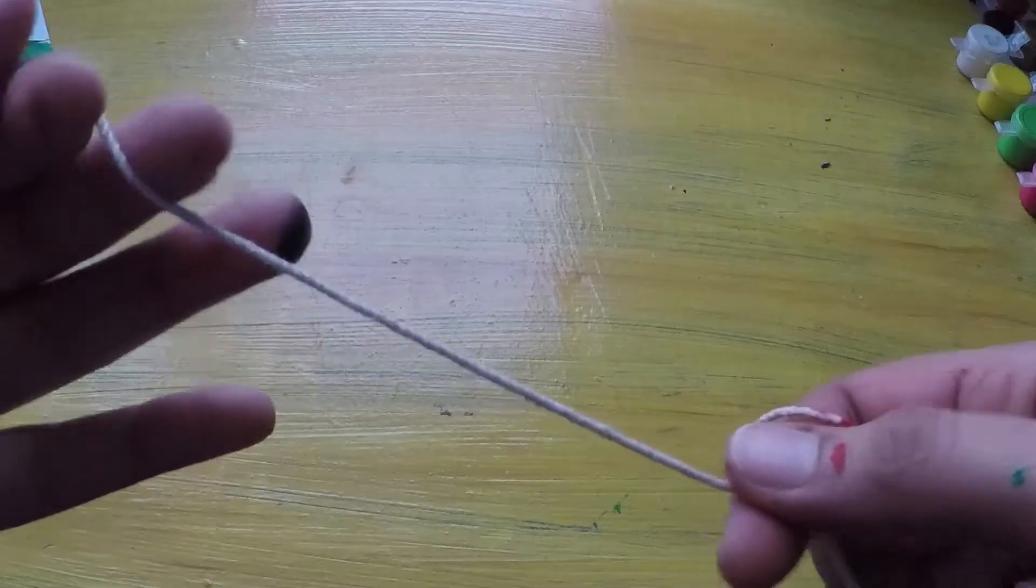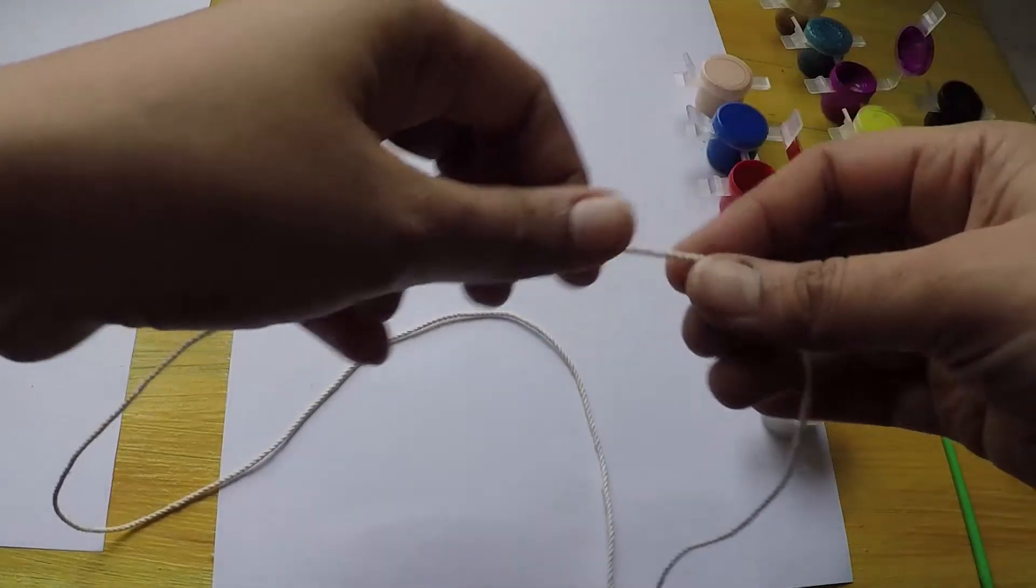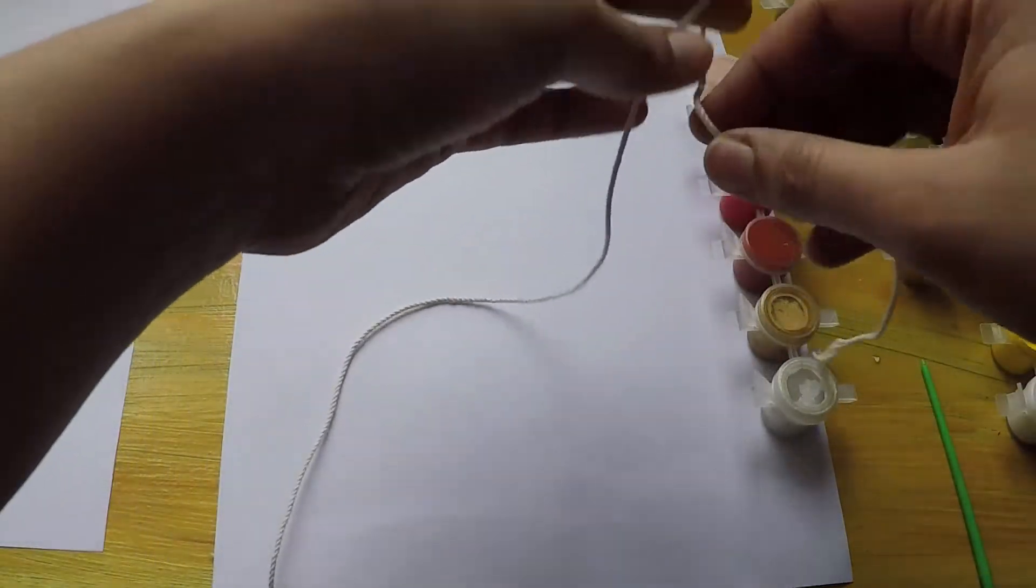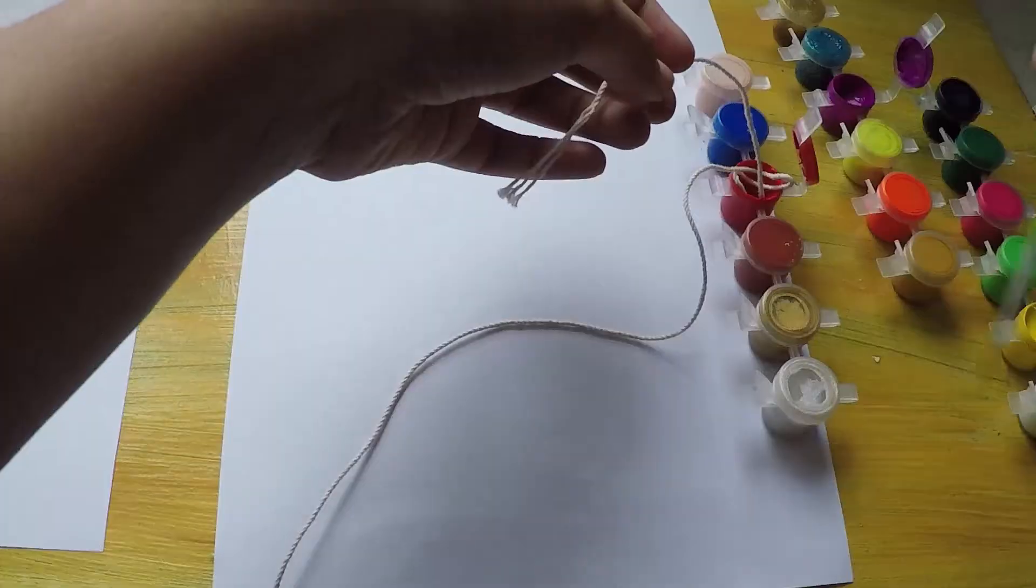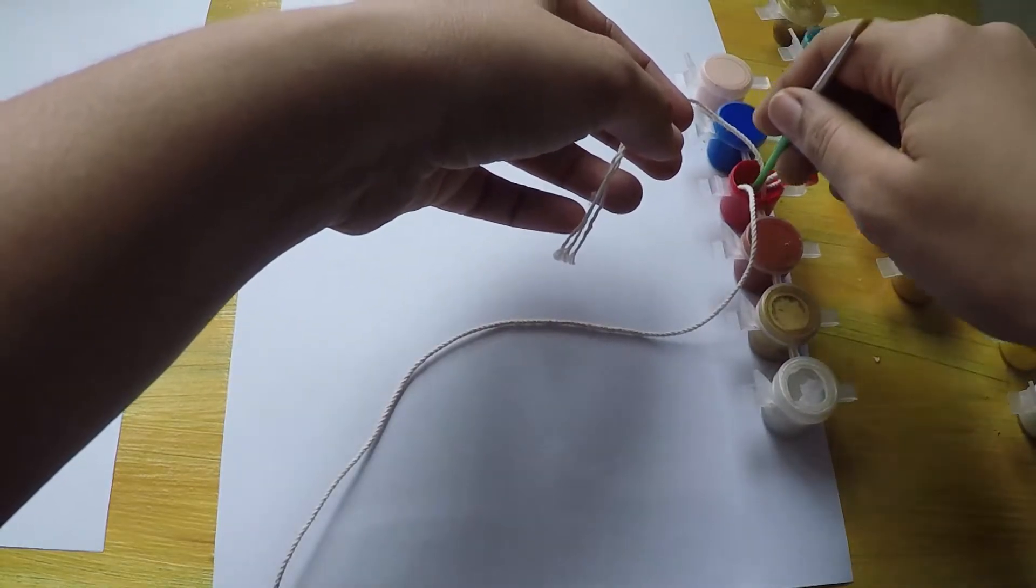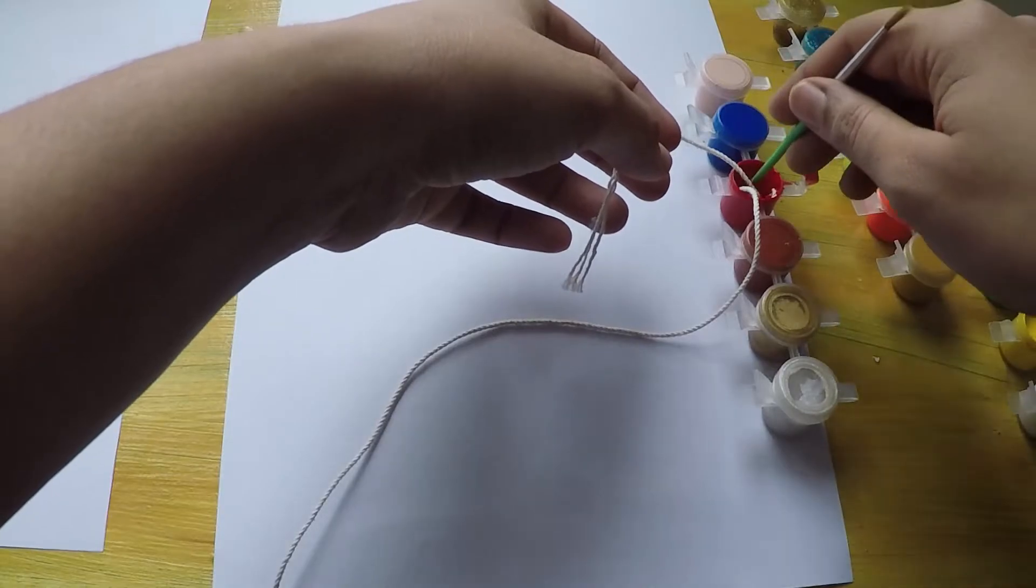I took a thick one, you can take a thin thread and do it. Now let's start. You can take any colors of your choice. For now I'm going to take red. You can dip it into the color.